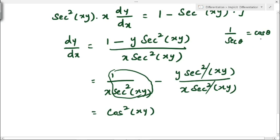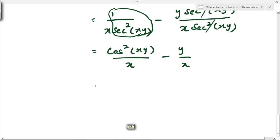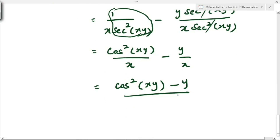Using the trigonometric identity 1/sec(θ) = cos(θ), we can write 1/sec²(xy) as cos²(xy). So the first term becomes cos²(xy)/x, and the second term is y/x. Combining over the same denominator, dy/dx = (cos²(xy) − y) / x.